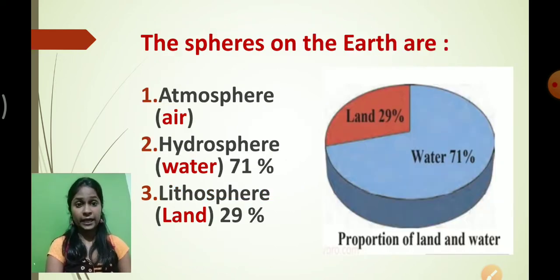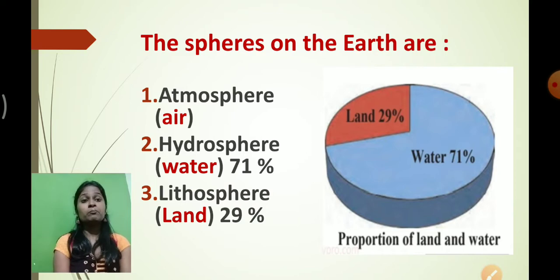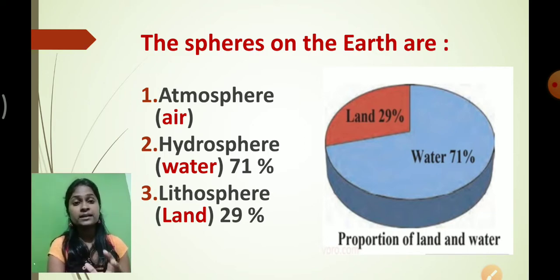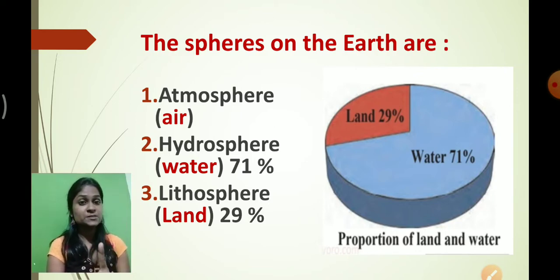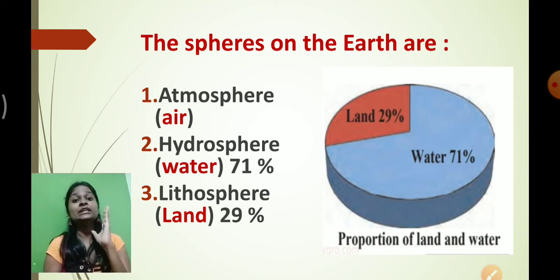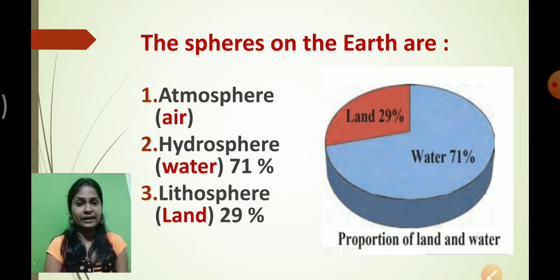Majority part of the Earth is covered by water. The percentage of water covering the Earth is 71%. Remember this percentage - 71% of the Earth is covered by water, and the remaining 29% is land.